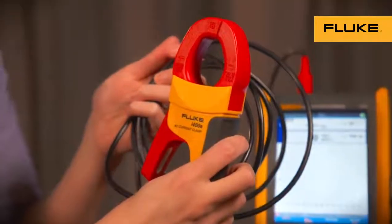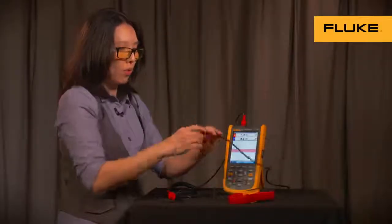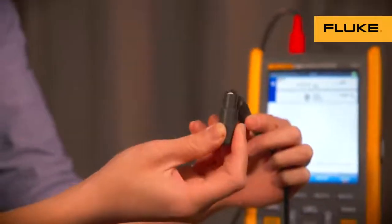This is the I-400S AC current clamp. In order to hook the AC current clamp up to the instrument itself, you'll need the BB120, which is the banana-to-BNC adapter.